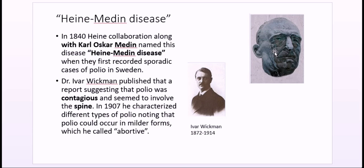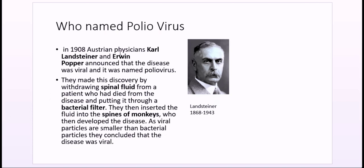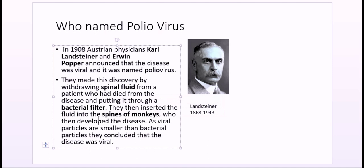Dr. Ivar Wickman published a report suggesting that polio was contagious and involved transmission through contact. In 1907, he was the first person to classify polio and coined the term 'poliomyelitis.' In 1908, Karl Landsteiner and Erwin Popper announced the disease was viral. They made this discovery by taking cerebrospinal fluid, passing it through a bacterial filter, and injecting the filtered fluid into the spines of monkeys, who then developed the disease. Since viral particles are smaller, they passed through the bacterial filter, confirming it was a viral disease.